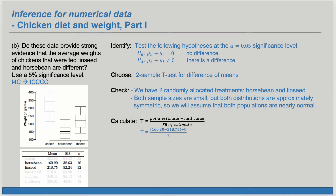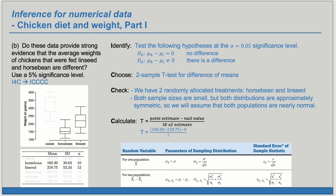Now we're ready to calculate. We want to calculate the test statistic t: the point estimate minus the null value, divided by the standard error of the estimate. We're doing it in the order of horse bean minus linseed. So our point estimate is the sample average for horse bean minus the sample average for those fed linseed, minus the null. Under H₀, the null difference is zero. The standard error for the difference of sample means is given by the formula using the sample standard deviations and sample sizes n₁ and n₂.